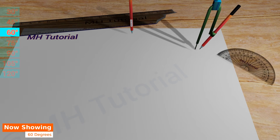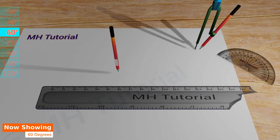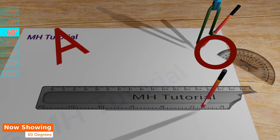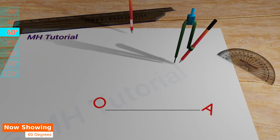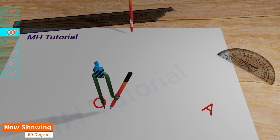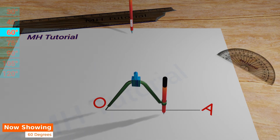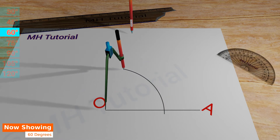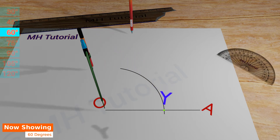For a 60 degrees angle, with a scale and a pencil a straight line is drawn in the middle of the page. The name of this segment is OA. Next, a pencil compass is taken and a circle arc is drawn with its tip placed at the point O. The arc of the circle intersects the straight line at the point Y.